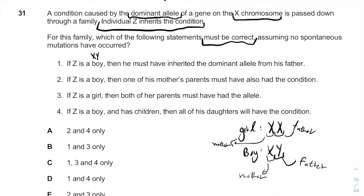Not the X allele from his father. If Z were a girl, she would be XX and would get the X chromosome from her father, and would show the disease. But Z is a boy, and therefore option one is not correct.